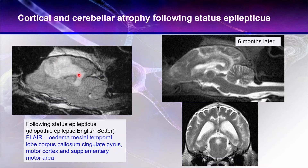Seeing these kinds of changes is actually one of the reasons why we don't necessarily recommend taking an MRI scan during status epilepticus. If we have a high suspicion that the dog has idiopathic epilepsy, it's not unusual for a dog to be referred as an emergency with a request for an emergency MRI scan. But if you take an emergency MRI scan in this situation, this is what you're going to see — which is not necessarily very helpful, because it doesn't tell the owner whether the dog has idiopathic epilepsy. It is much more important to control the seizures first.